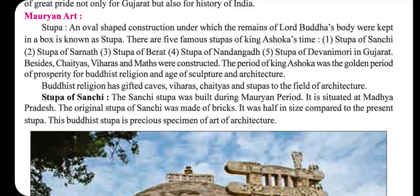Five famous stupas of King Ashoka's time are: the stupa of Sanchi, stupa of Sarnath, stupa of Bairat, stupa of Nandangarh, and stupa of Devni Mori in Gujarat. Besides these, chaityas, viharas and maths were also constructed at that time.